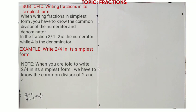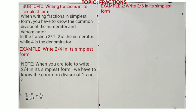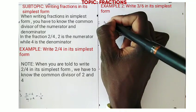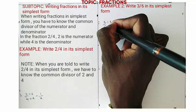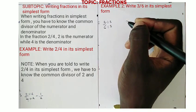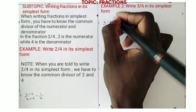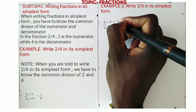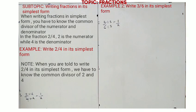Second example. Write 3/6 in its simplest form. 3 is the common divisor. Therefore, we take 3/6 and divide 3 by 3 and then divide 6 by 3 also. 3 divided by 3 equals 1 and 6 divided by 3 equals 2. Therefore, one-half is the simplified fraction.